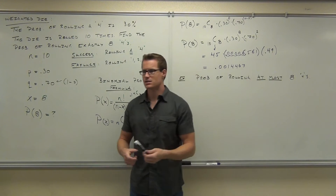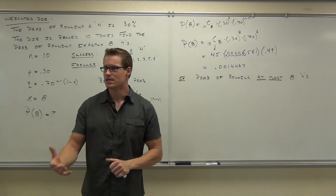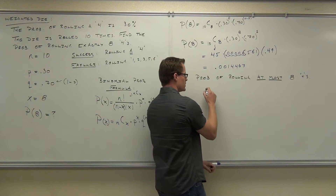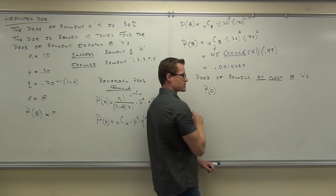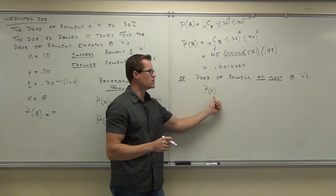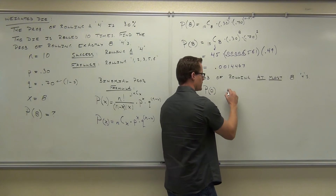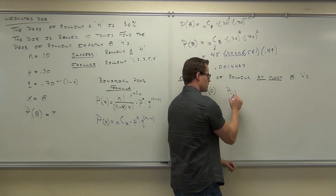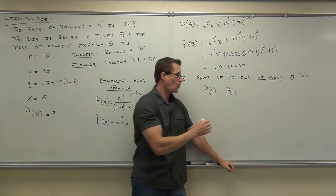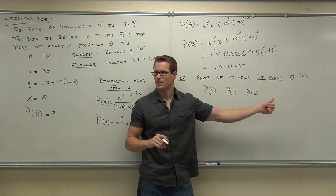So we're looking at 'at most $8.' At most $8 means you could have $0, $1, $2, $3, $4, $5, $6, $7, or $8 — those are the number of fours that come up in your ten rolls. So $0 successes would satisfy this. If I get no fours, is that at most $8? Yes. You could also get one four, or two successes — would those satisfy 'at most 8'? Yes, are you with me on this?